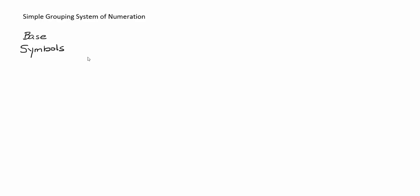In a simple grouping system of numeration, you will have a base and you will have symbols to represent powers of that base. For example, let's suppose that we wanted to look at a system that had a base of 3 and the number of symbols in the system happened to be 4. We can just make up any symbols we want, and each one of the four symbols represents a power of the base.